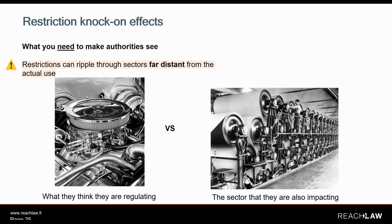A restriction can have knock-on effects and the impact may not be visible as it can be very far away from the initial use. If you're providing input to the restriction process you need to ensure that the authorities are aware of your sector — you need to be visible in this process. For example, the restriction on chromium trioxide may focus on regulating shiny decorative chrome coatings such as bathroom fittings, car bumpers, and hubcaps, but other sectors like paper mills and the applicator rods used in their process are very unlikely to be visible to the authorities.